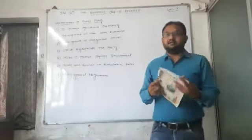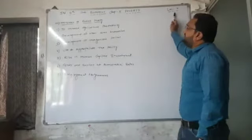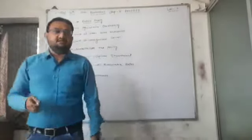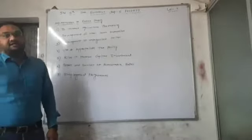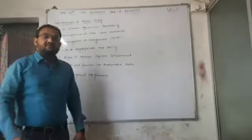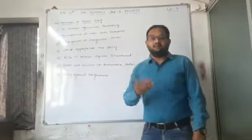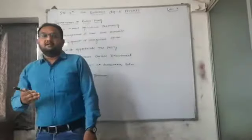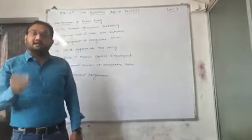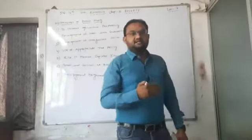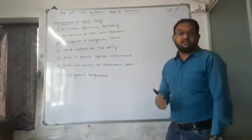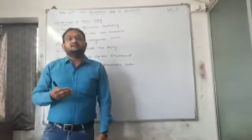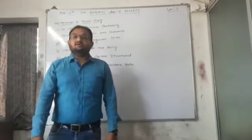Good morning, good afternoon, and good evening students. Today we are going to discuss lecture number 7 of chapter number 5 of subject economics, that is poverty. In the past six lectures we have already discussed everything about this chapter: the introduction, meaning of poverty including traditional and modern poverty, absolute poverty and poverty line, relative poverty, and various indicators showing what is poverty.